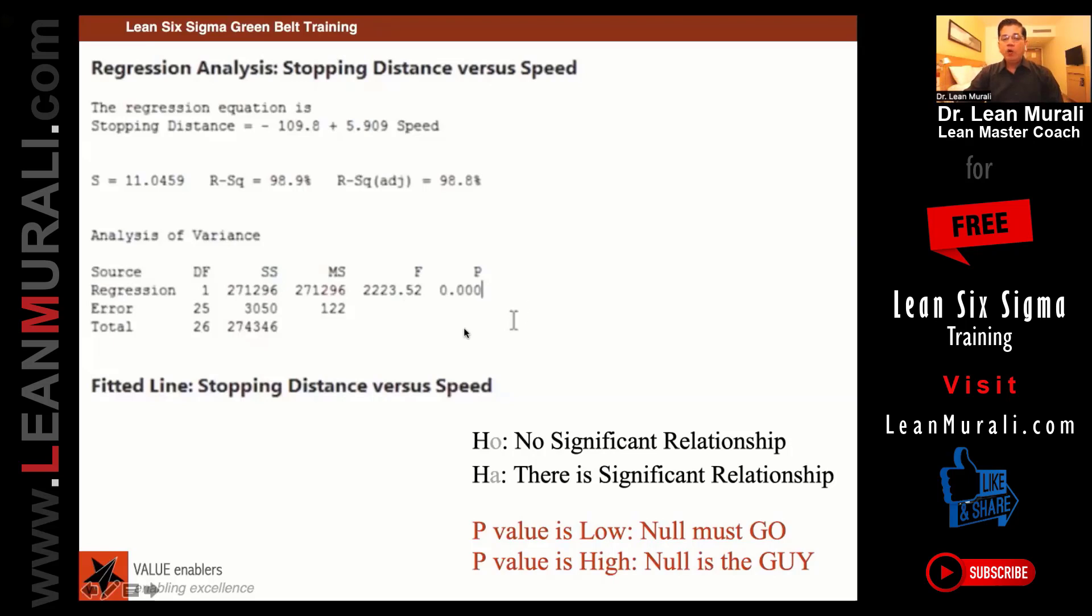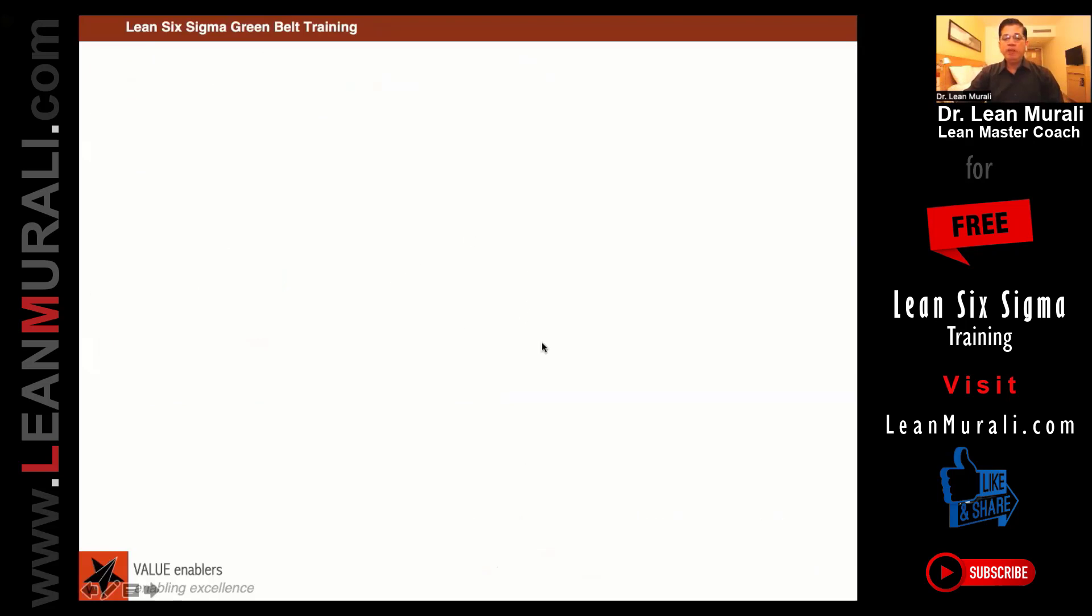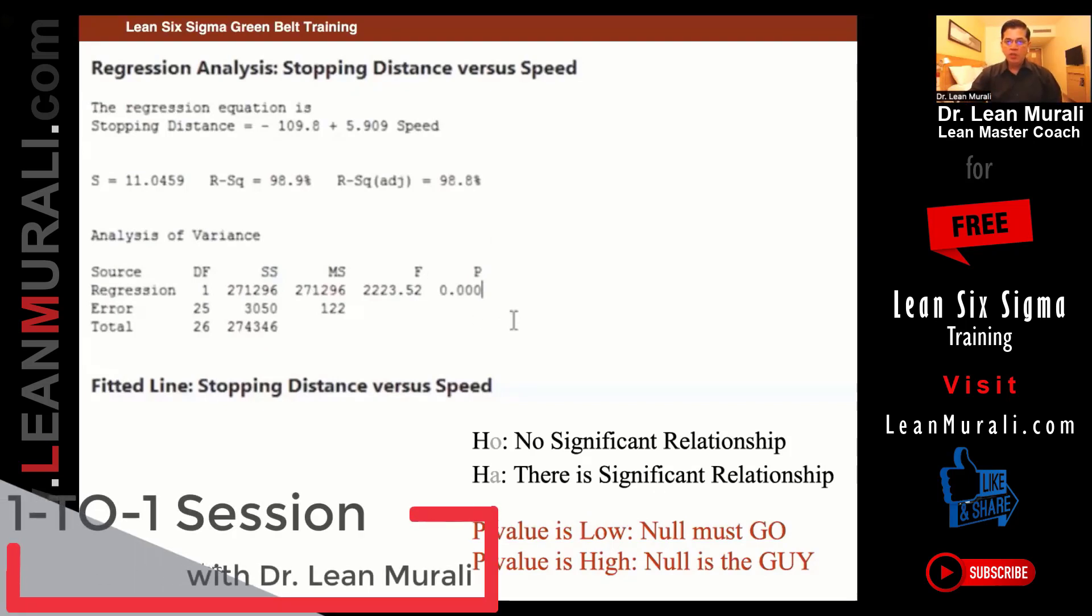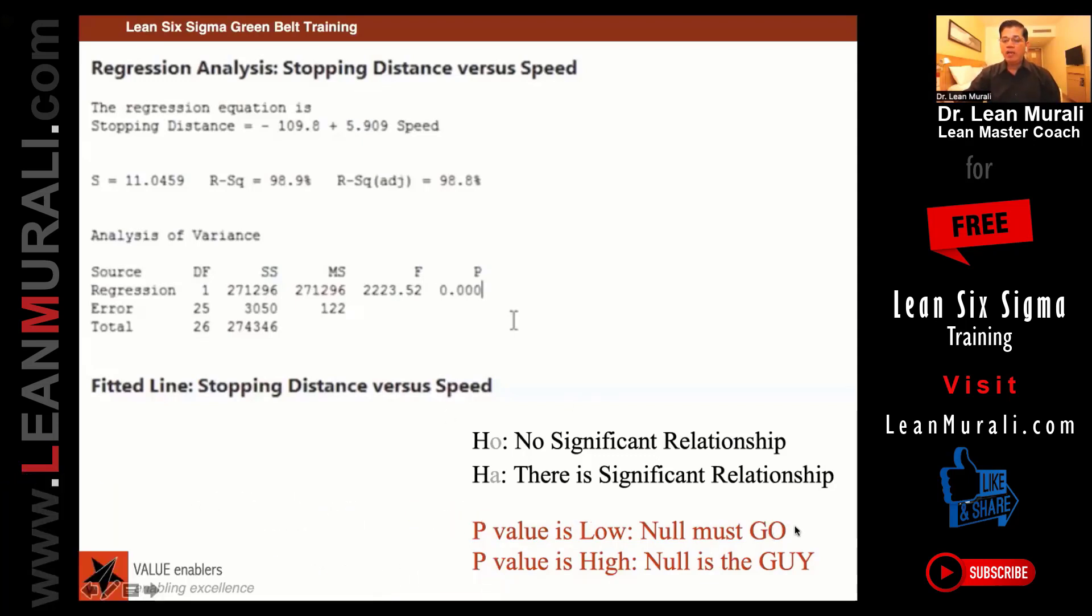So now P value, how much do you see as the P value? Here, how much do you see as a P value? Is 0. Is it lower than 0.5? Is it low or high? Is it low? If P value is low, the null must go.